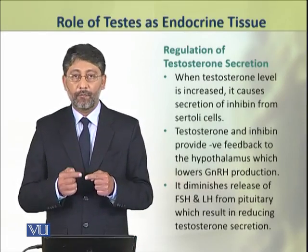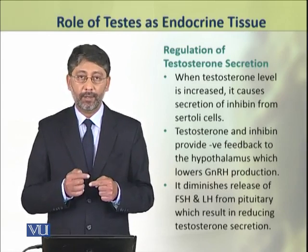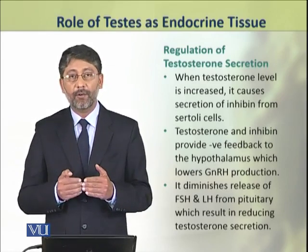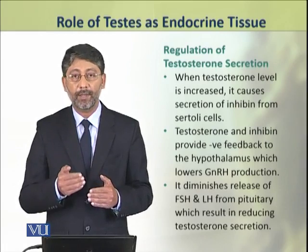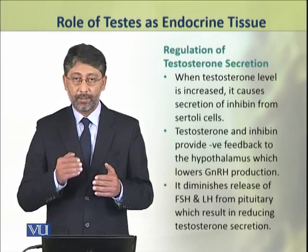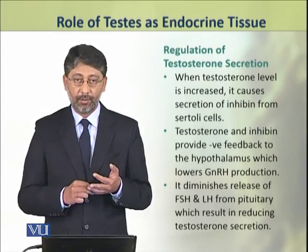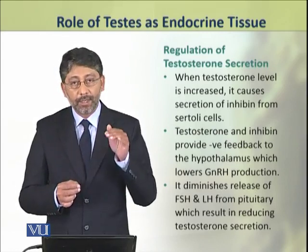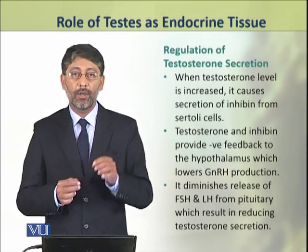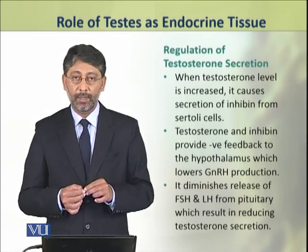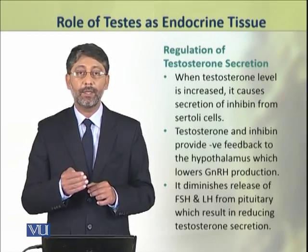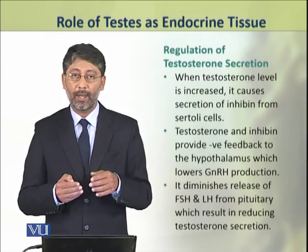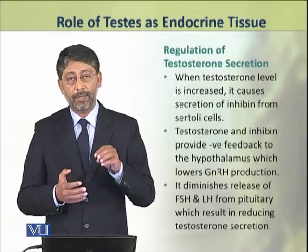When the level of testosterone in the blood rises to a certain level, it causes the production of inhibin hormone from the Sertoli cells of the testis. This inhibin, along with testosterone, provides a negative feedback to the hypothalamus, which decreases the synthesis and release of gonadotropin releasing hormone. That decrease results in decreased secretion of FSH and LH by the pituitary, and ultimately a decrease in the production and release of testosterone.